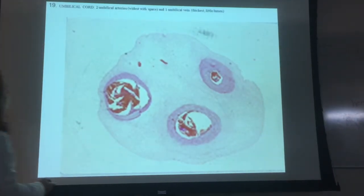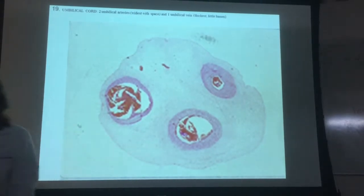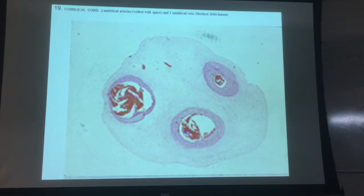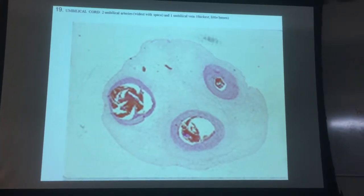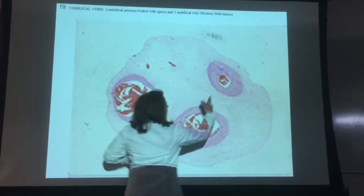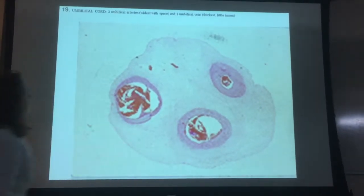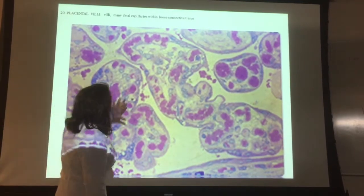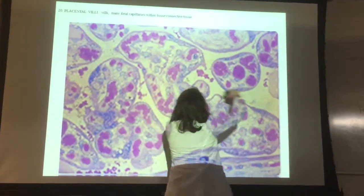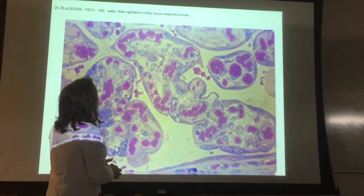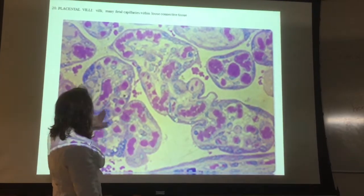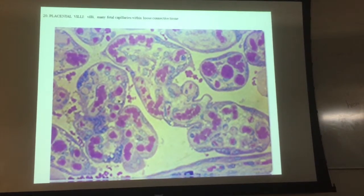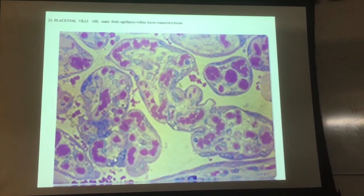This is the umbilical cord. You have two umbilical arteries and that's the umbilical vein. This is the placenta — this is the villi. The villi are very long, kind of bumpy things, and you have connective tissue inside. This is where the mother's blood and the baby's blood exchange nutrients, but they don't actually mix themselves.